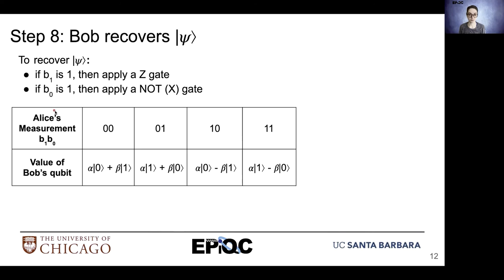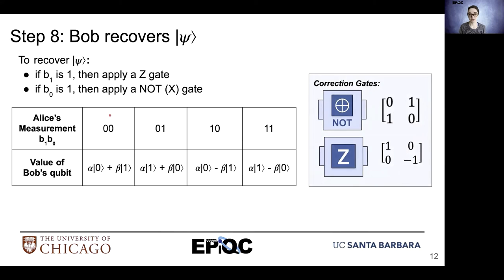If the second bit Alice measures is one, Bob will apply a NOT gate or an X gate. Here are our correction gates. If Alice measures a zero zero, no correction is needed — Bob already has the recovered state for psi, the message qubit.